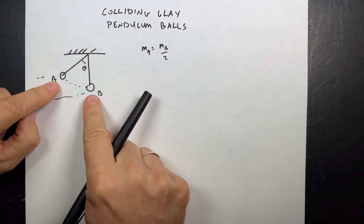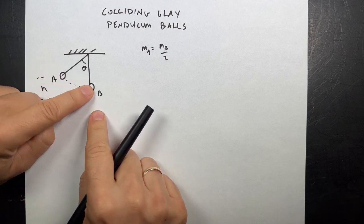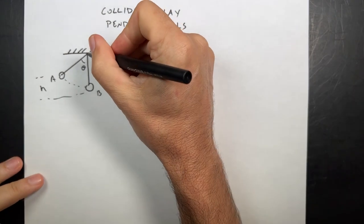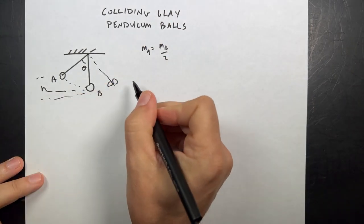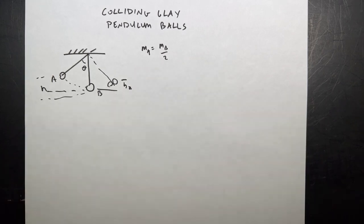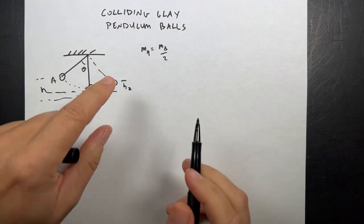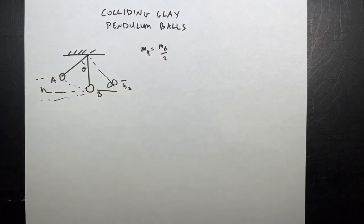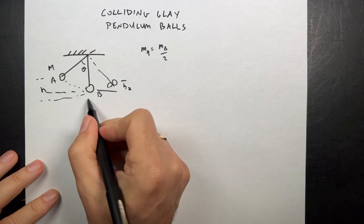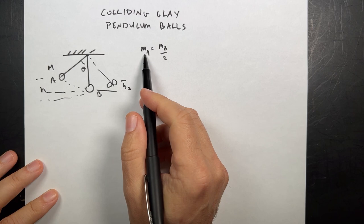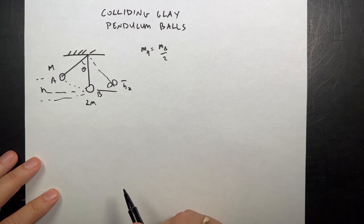I drew a picture. So we have two clay balls, ball A and ball B. Ball B is hanging right there. Ball A swings down and hits it, and they stick together. After they stick together, the two swing up some new height. This starts at a height H, and we'll call this H2. How high do they go afterwards? They also said mass A is half the mass B. So I'm actually going to call this M, and this is 2M.